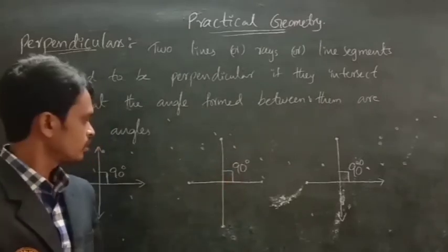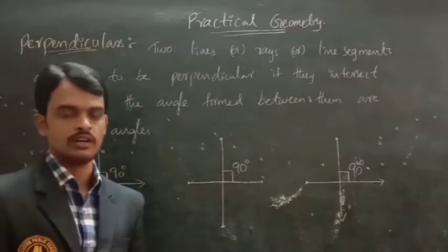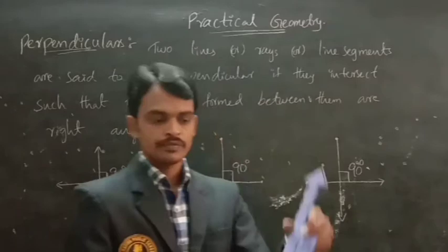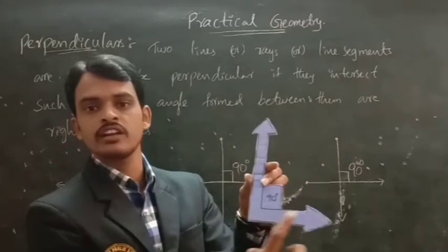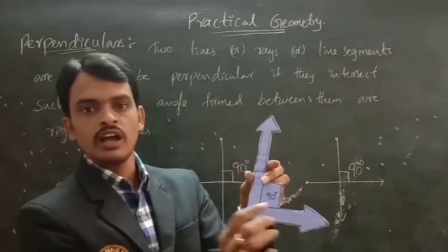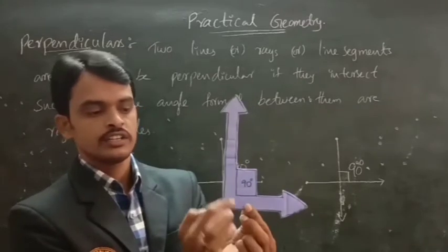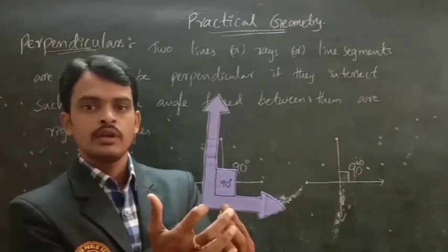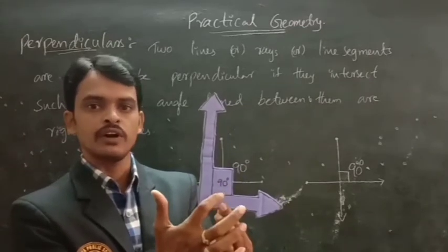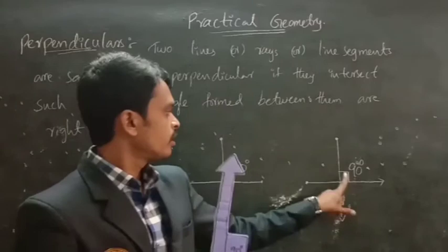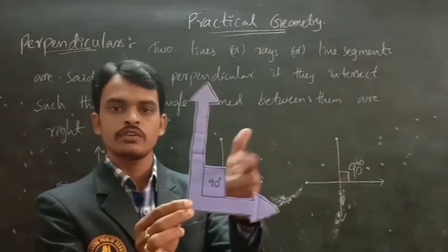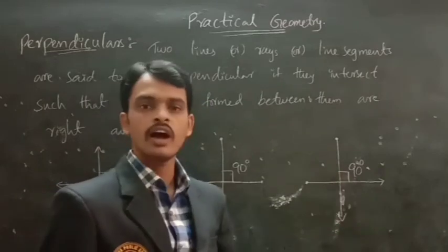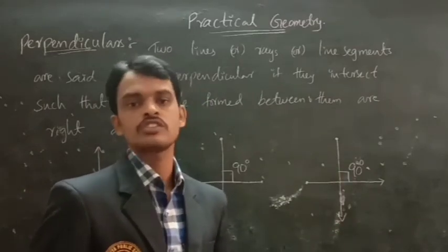Now, next: rays. Look at here — this is one ray and this is another ray. These two rays intersect. These two rays are perpendicular to each other.